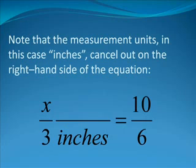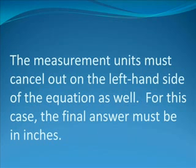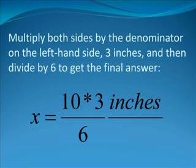Note that the measurement units, in this case inches, cancel out on the right-hand side of the equation. Then we have X divided by 3 inches is equal to 10 over 6. The measurement units must cancel out on the left-hand side of the equation as well. For this case, the final answer must be in inches.